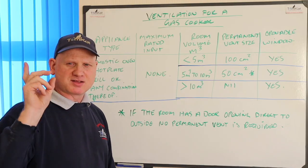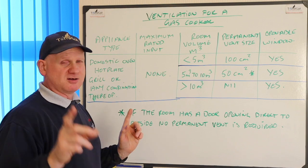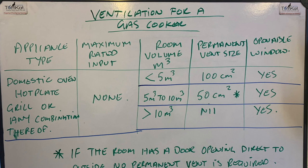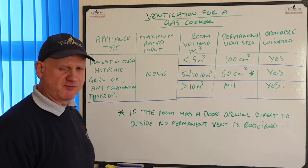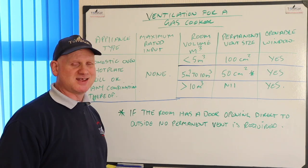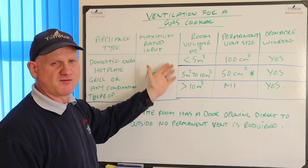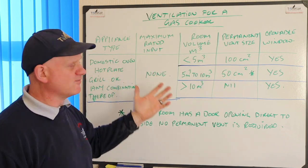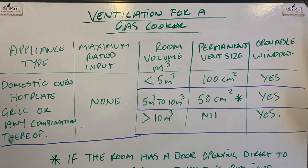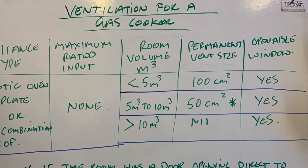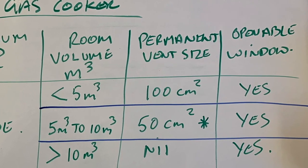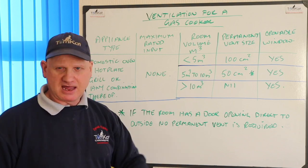Let's have a quick look at the ventilation requirements for cookers. The appliance type covers a domestic oven, hot plate, grill, or any combination thereof. It doesn't matter what the maximum rated input is — you still need to refer to this section about room volume and the size of permanent ventilation required. If we have a room volume of less than five metres cubed, we'll need 100 centimetres squared of free air plus an openable window or any other means of extraction.